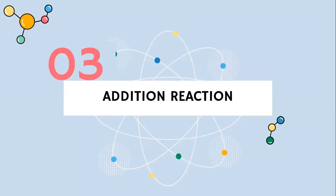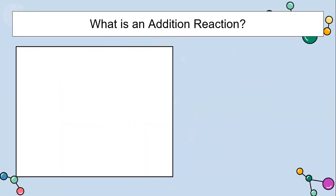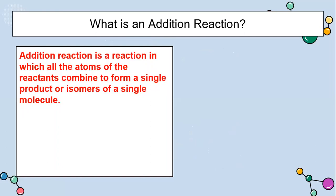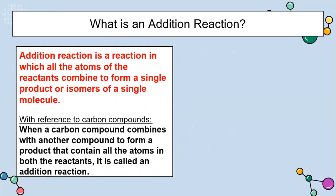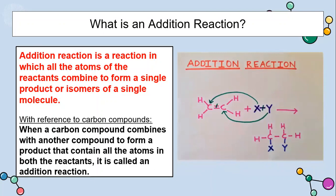Let us now understand the third type of reaction in the chemical properties of carbon compounds — the addition reaction. In this type of reaction, all the atoms of the reactants combine to form a single product or isomers of a single molecule. In the case of carbon compounds, molecules containing multiple bonds such as double or triple bonds undergo a reaction with another reactant, which gets added across the multiple bond to form a single product. A pictorial representation is given here. When ethene undergoes addition reaction with XY, the molecules X and Y get added across the double bond to form one product.